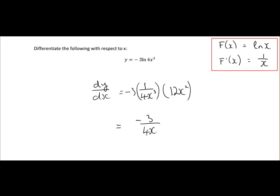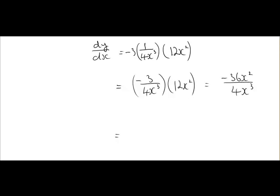So we have -3 times 1 over 4x³ times 12x². That will give us -3 times 12x² which is -36x² over 4x³. To break that down to its lowest terms, 4 into 4 goes once, 4 into 36 goes 9 times. x² into x² goes once, x² into x³ goes x times. So on top, we've got -9, and on the bottom, we just have x.